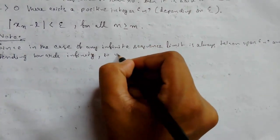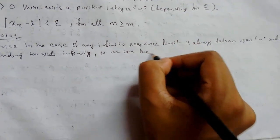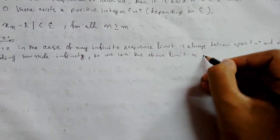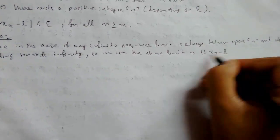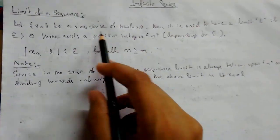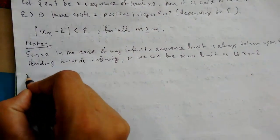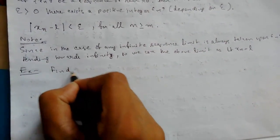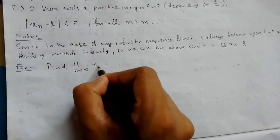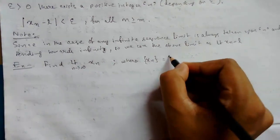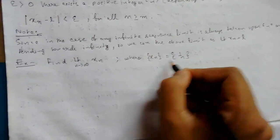Note: since in the case of any infinite sequence, the limit is always taken with n tending towards infinity, we can write the limit as lim x_n = L with no need to write that n is tending to infinity. This definition is quite complicated, so let us take an example to clear it up. Example: find the limit as n tends to infinity of x_n, where x_n = 1/n.